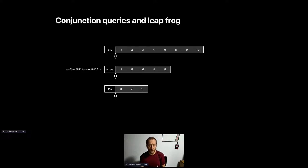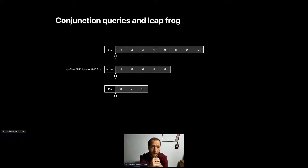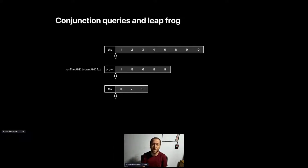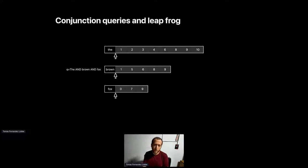The idea of an inverted index is that it makes it easy and efficient to resolve queries, in particular text queries. Let's take one example of how the inverted index could be used. Say we have a query for 'the' AND 'brown' AND 'fox' — we want documents that match all three terms. This is essentially a best-case scenario. Lucene will iterate each of those posting lists and leapfrog over them to produce the final result as efficiently as possible.